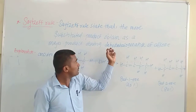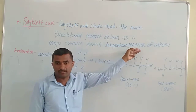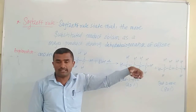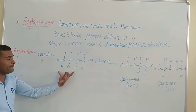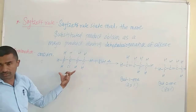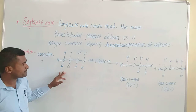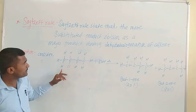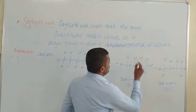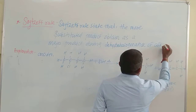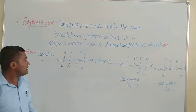This rule is applicable to dehydrohalogenation of alkanes. Here, we remove hydrogen and halogen atoms. Consider this reaction — there is a formation via dehydrohalogenation of the alkane.